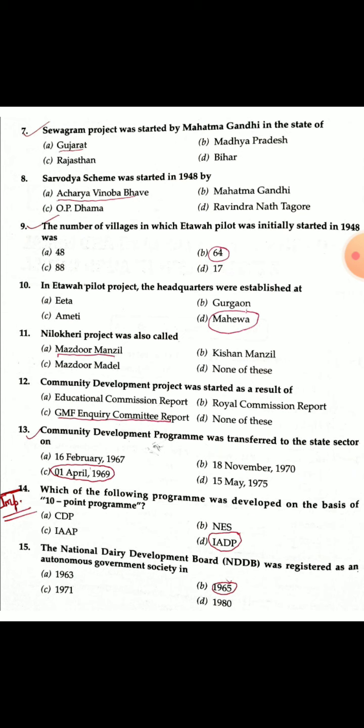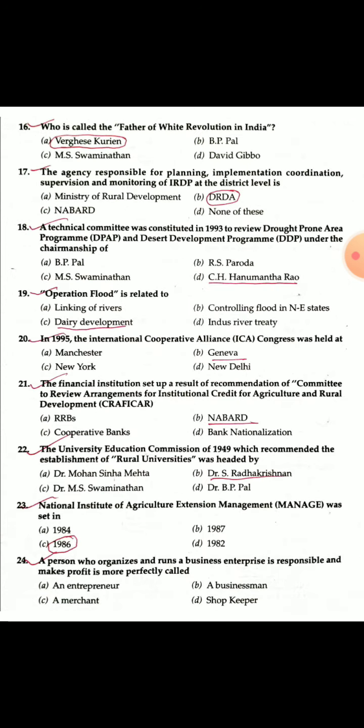Question 15: The National Dairy Development Board (NDDB) was registered as an autonomous government society — NDDB was first established in 1965. Question 16: Who is called the Father of the White Revolution in India? Varghese Kurien is called the Father of the White Revolution in India.